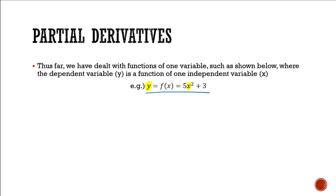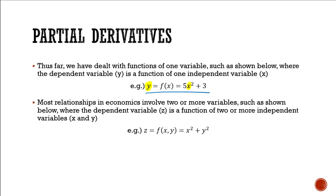y is responding to only one independent variable, x here. However, the reality is that most relationships in economics involve two or more variables, such as what we have here: z, which is a function of both x and y, z being x squared plus y squared.